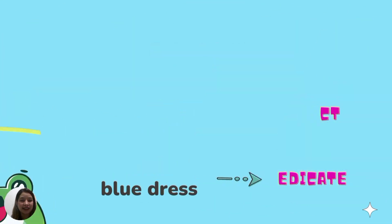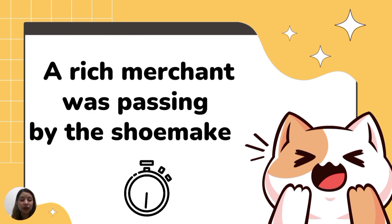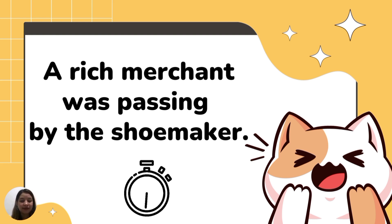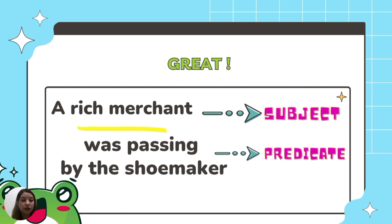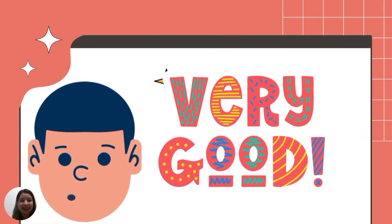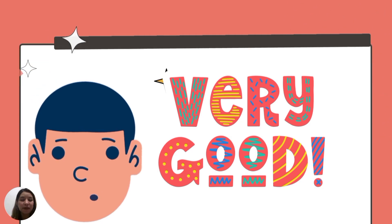Let's try another one. A rich merchant was passing by the shoe maker. Can you guess what is the complete subject and the complete predicate in this statement? Great! The complete subject is a rich merchant. On the other hand, was passing by the shoe maker is the complete predicate. I am glad that you were able to identify the subject and the predicate in the given statements.